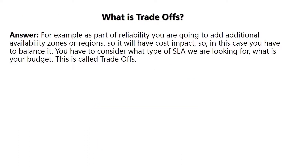The next question is: what are trade-offs? Trade-offs is a very important term in Azure. For example, as part of reliability, if you are going to add additional availability zones or regions, it will have a cost impact. So in this case, you have to balance it — you have to consider what type of SLA you are looking for and what your budget is. This balancing act is called a trade-off.